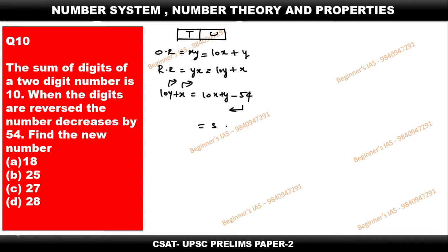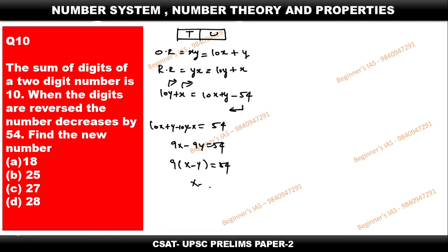Just simplify: bring the minus 54 towards the LHS and the remaining towards the RHS. After simplifying, we get 9X minus 9Y equals 54. Taking 9 as common: X minus Y equals 54 divided by 9. Cancelling, we get X minus Y equals 6.